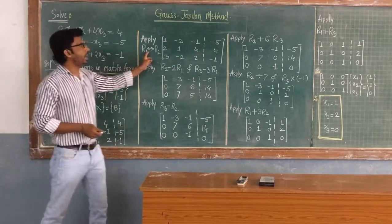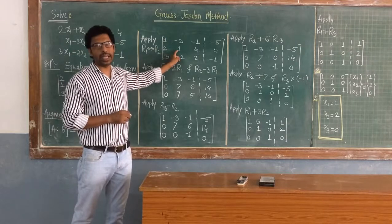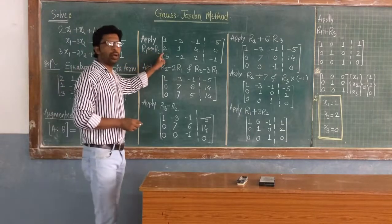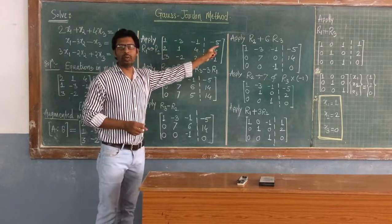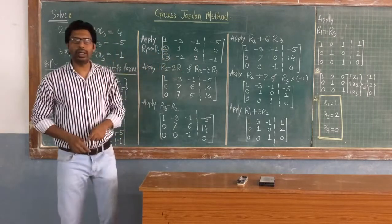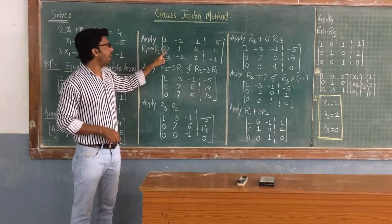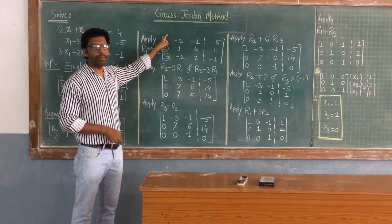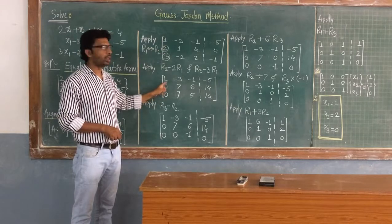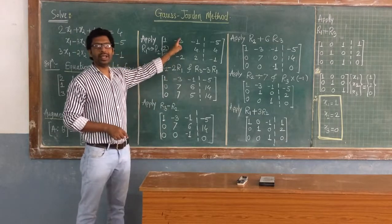The very first operation is to interchange R1 with R2, because if the first element is 1 it is simpler to convert the remaining elements to 0. After interchanging R1 and R2, R2 becomes R1 and R1 becomes R2. Next, to convert the first-column elements in R2 and R3 to zero, apply the operations R2 = R2 - 2R1 and R3 = R3 - 3R1. For R2 - 2R1: the first element gives 2 - 1×2 = 0; the second element gives 1 - (-3)×2 = 1 + 6 = 7.